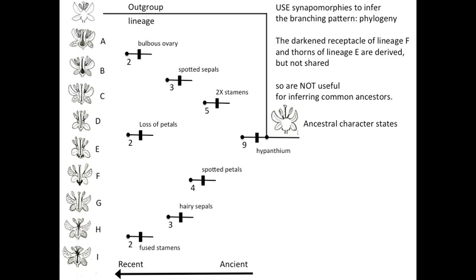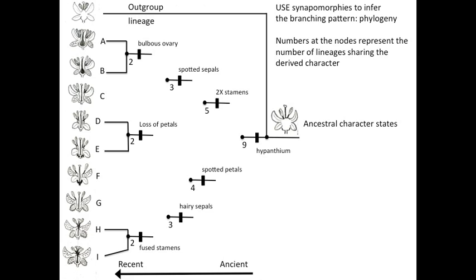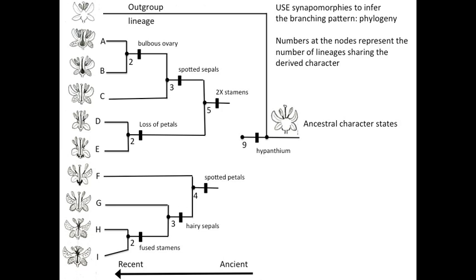The darkened receptacle of lineage F and the thorns of lineage E are derived, but they are not shared with any other lineage, so they are not useful for inferring common ancestors. Next we draw lines to connect the lineages to their common ancestors, and lines from the more recent common ancestors to the more ancient common ancestors, and two more lines to connect the original two lineages back to the common ancestor of all nine lineages that evolved the hypanthium.